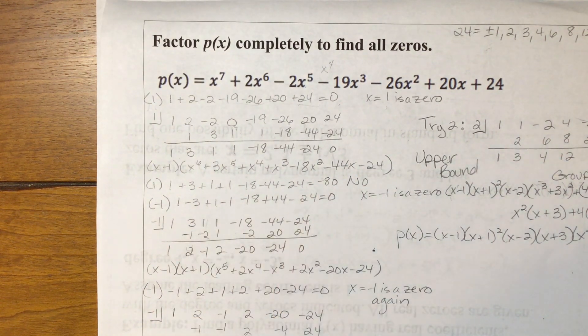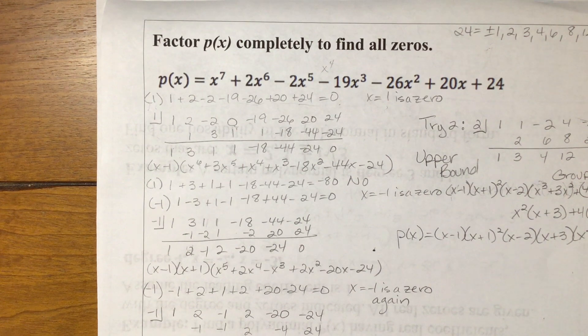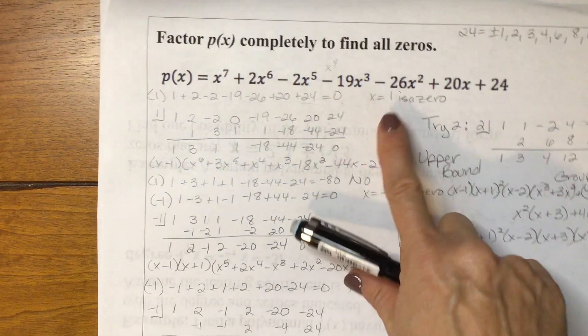So positive 1, we're done with it. It will never work again. So we know that it was one of our zeros.